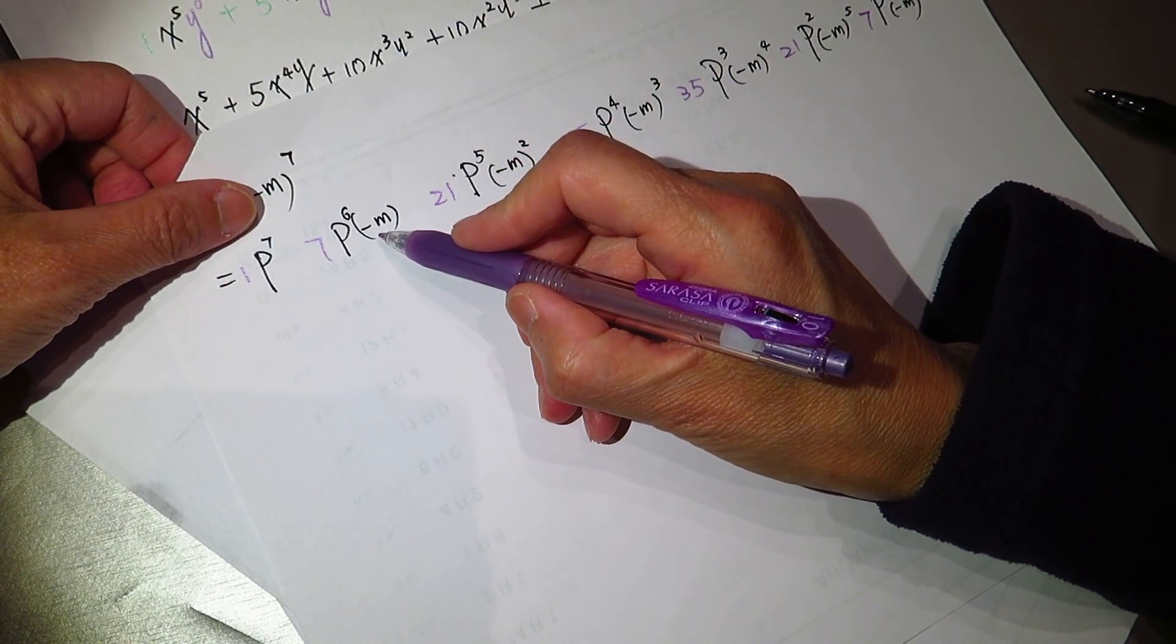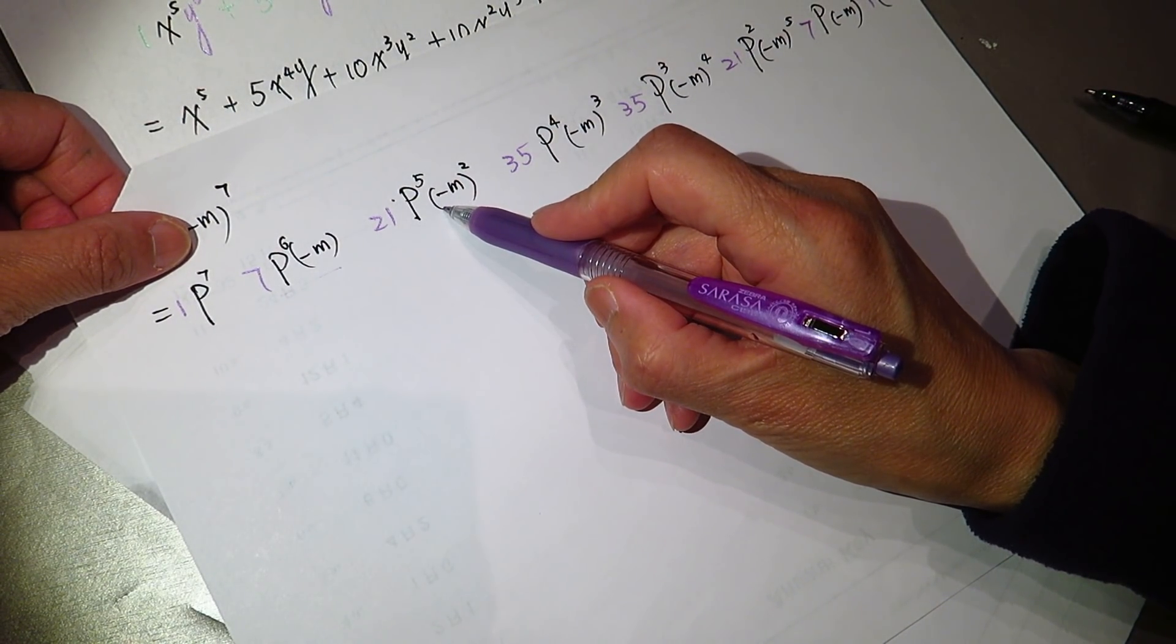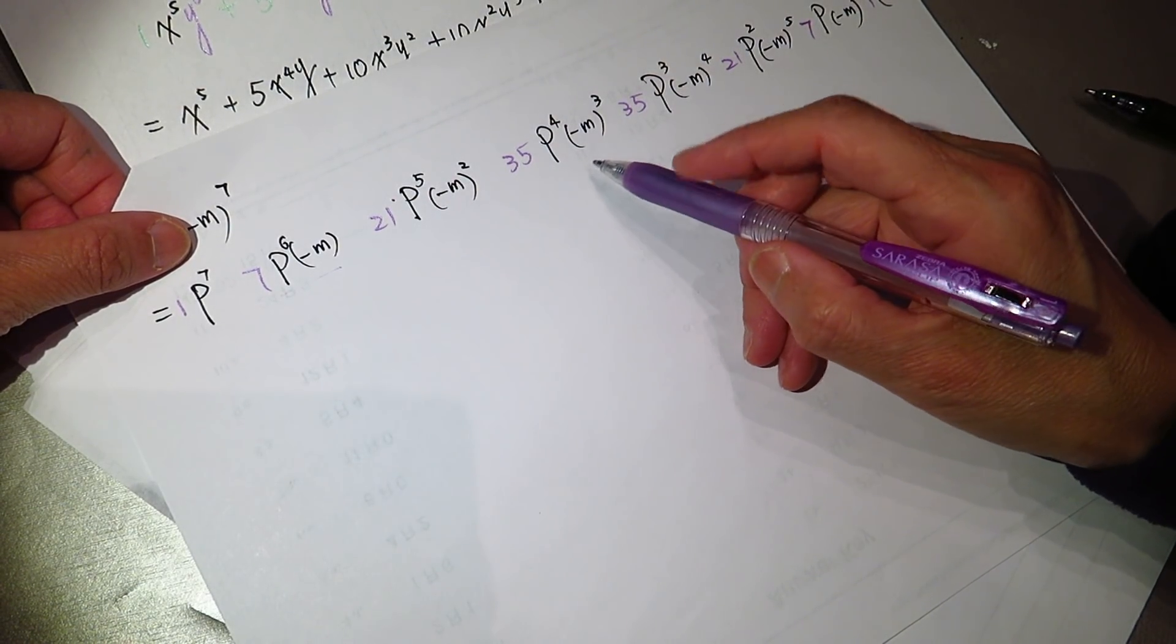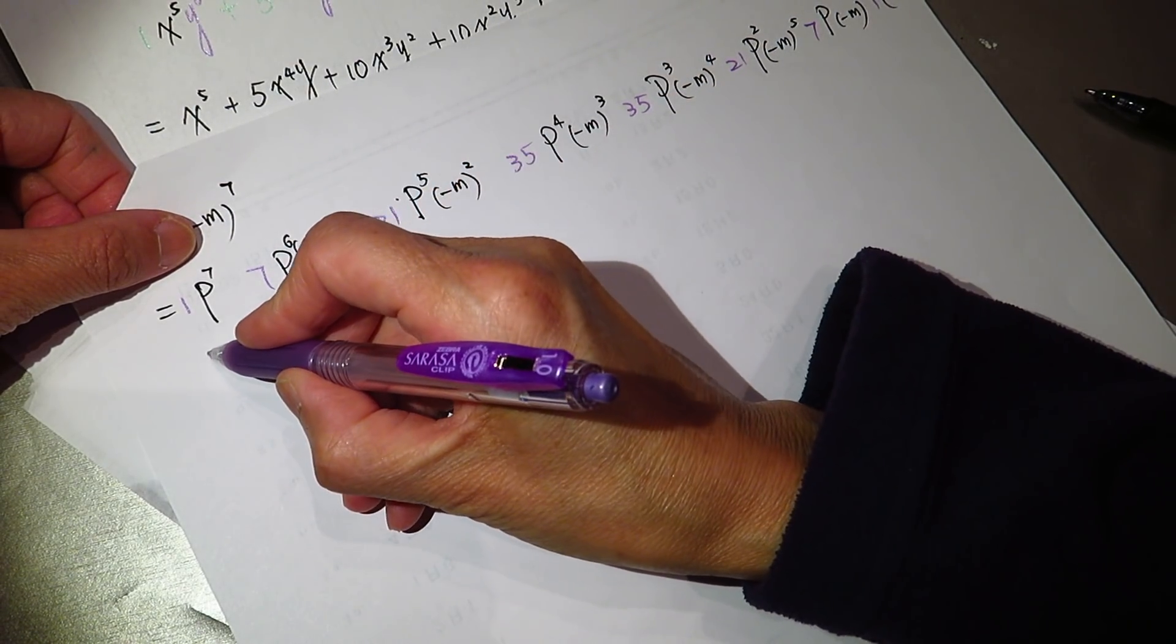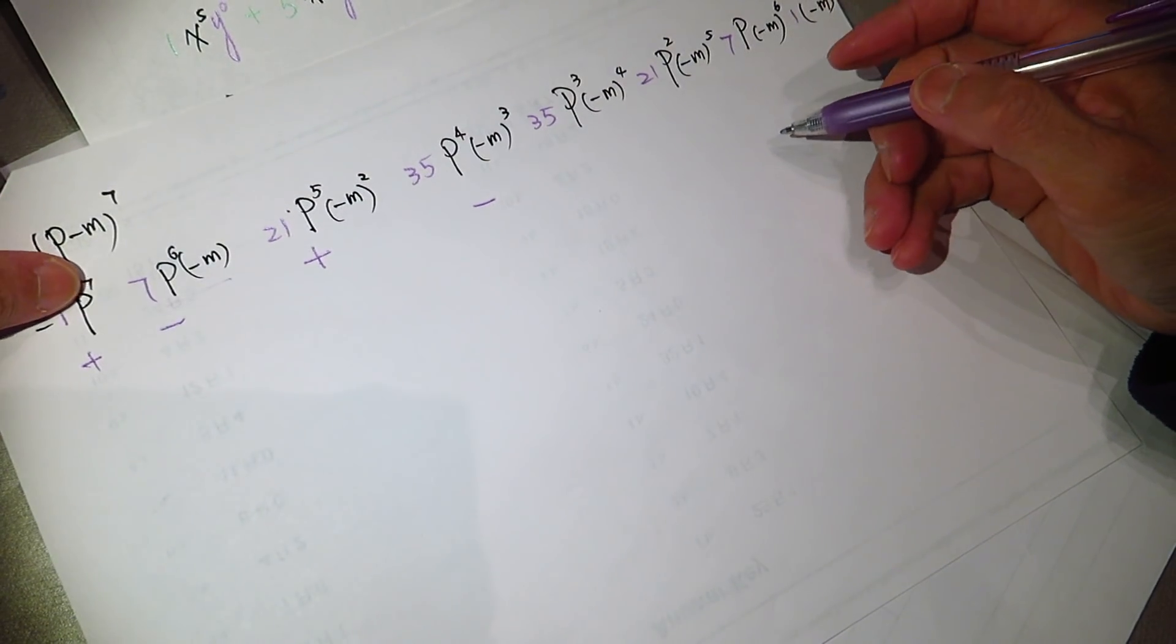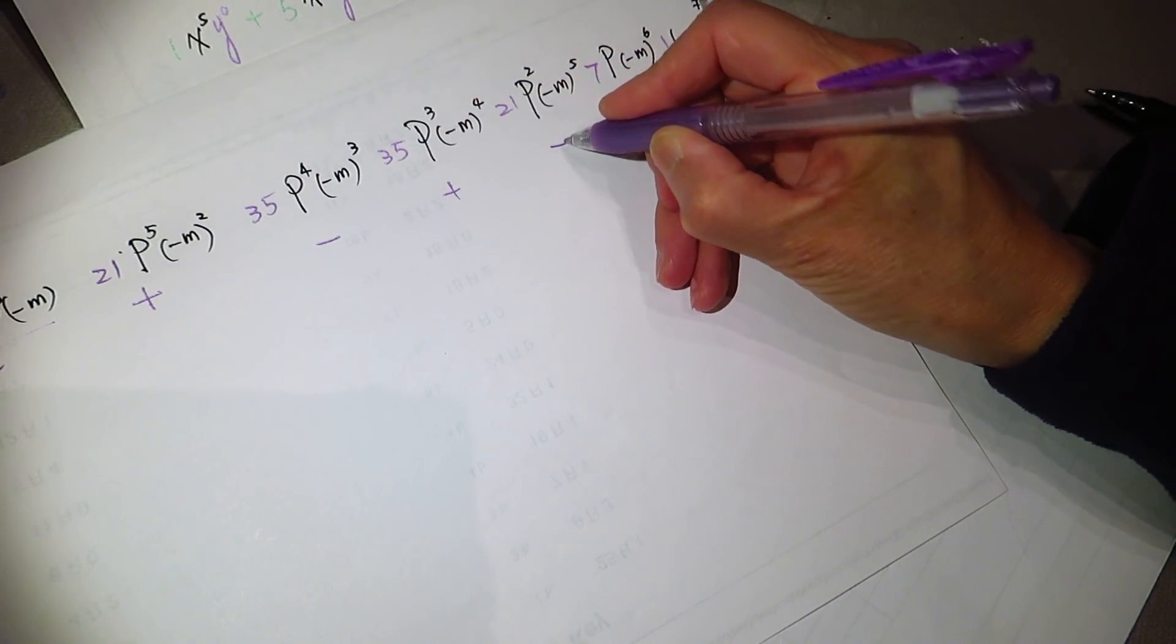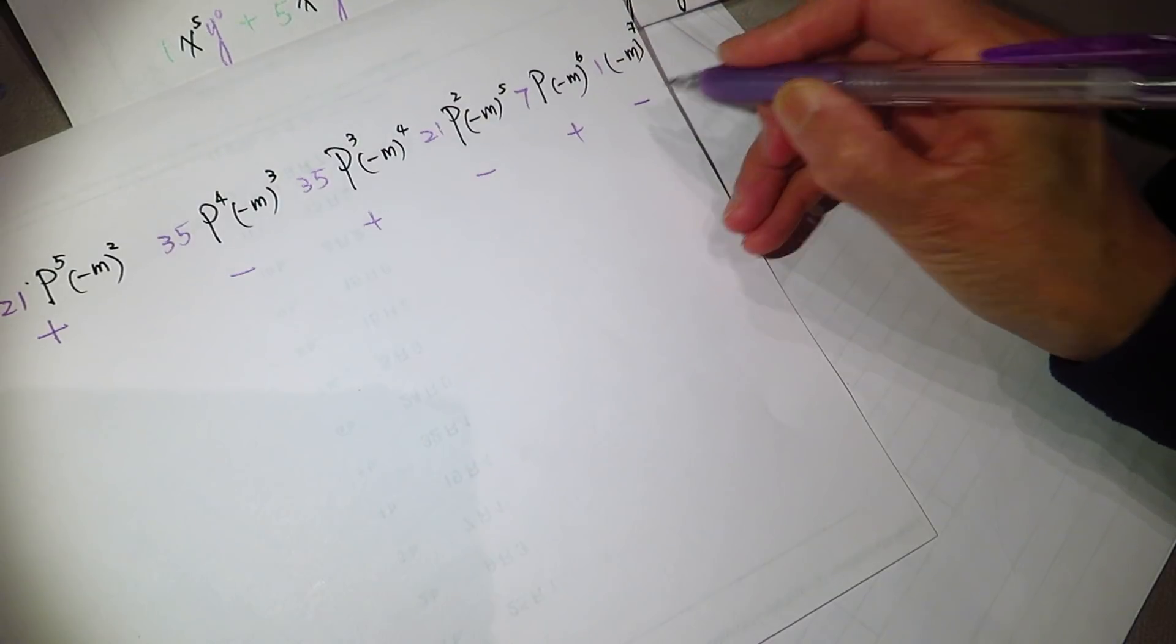One time negative is negative. Two times negative squared is positive. So this one, the term is positive, negative, positive, negative, positive. Three times negative, four times positive, five times negative, six times positive, seven times negative.